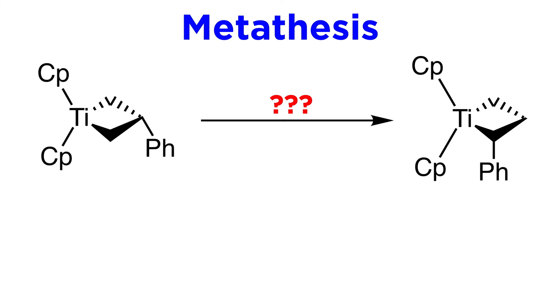Finally, let's look at this transformation and see if we can explain it using metathesis. We have a titanium complex with this interesting four-membered ring, and a phenyl group on the other end. The product looks precisely the same, but with the phenyl group on this carbon instead. How could this be possible?